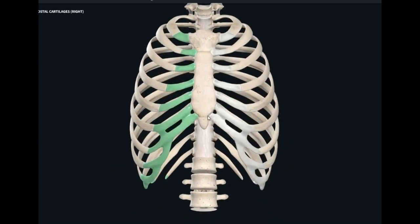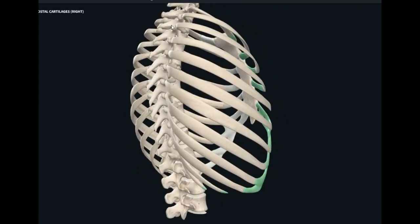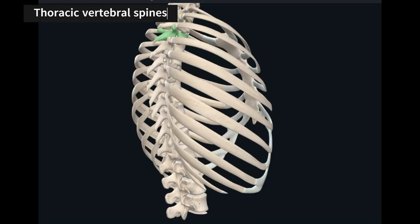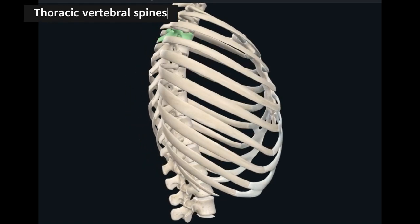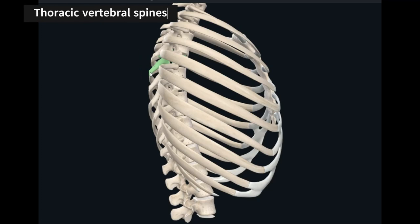There is one more important bony landmark — the spines of the thoracic vertebrae. Posteriorly, you have the thoracic vertebrae. These vertebrae have a small projection known as the spinous process. The spinous processes are present in the midline on the posterior side, and all the thoracic spines can be palpated in the midline posteriorly.